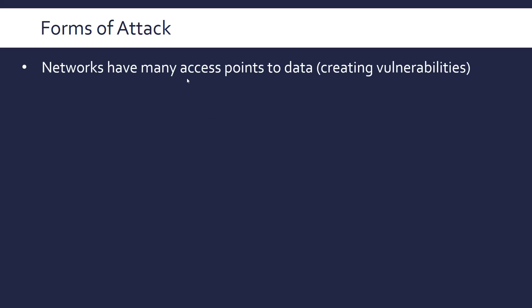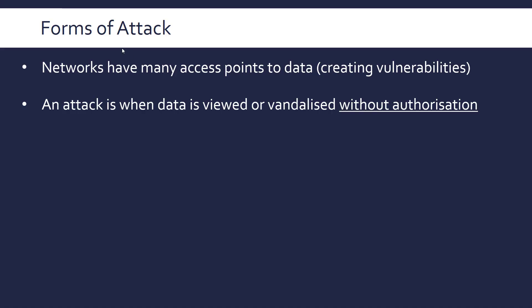Let's look at some forms of attack. Having access points to a network or a system in general creates vulnerabilities at those access points. So the more access points, the more vulnerabilities you have. An actual attack, if we can define it, is when data is viewed or vandalized without authorization. It's not necessarily illegal — when a government body like the NSA in America or GCHQ in the UK is hacking into people's systems, they're doing it legally because they've got the power, but they're not doing it with authorization, so it falls under this term.